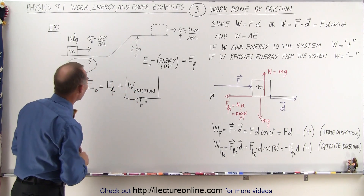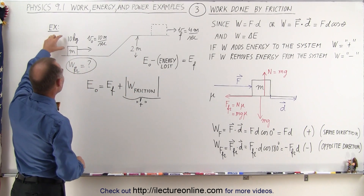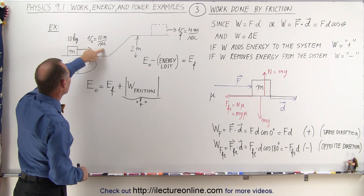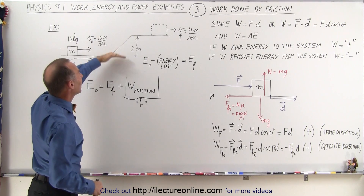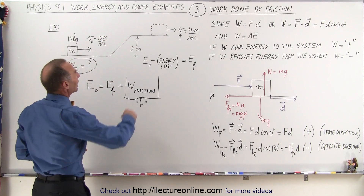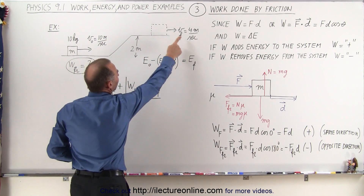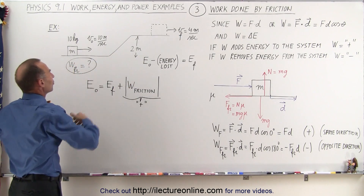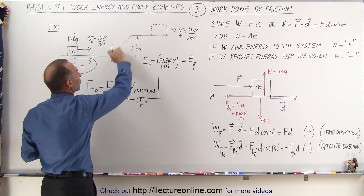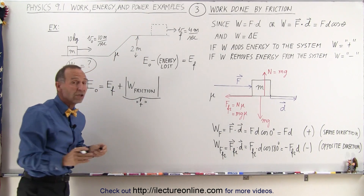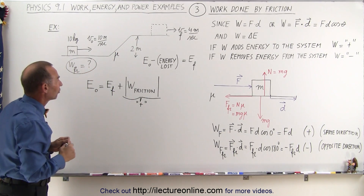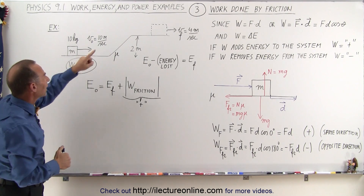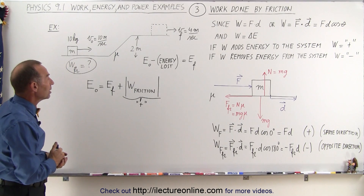Let's look at this example. We have a block with a mass of 10 kilograms that has an initial velocity of 10 meters per second. It moves up a ramp, gains a height of 2 meters, and when it gets to the top of the ramp it has a velocity of 4 meters per second. There is a coefficient of friction, so the block will also lose some energy due to the friction force. We are trying to find the work done by friction in this case, which we know will be a negative quantity.